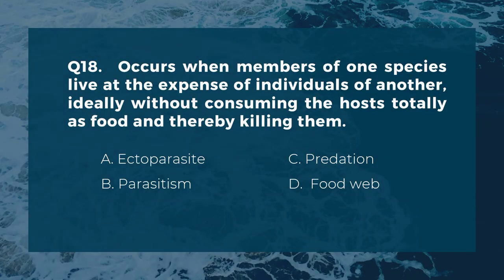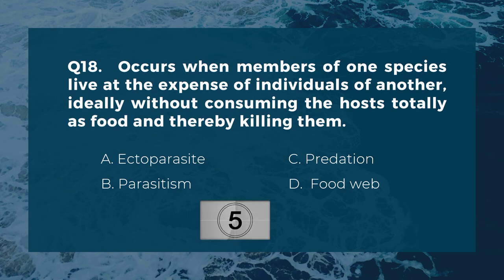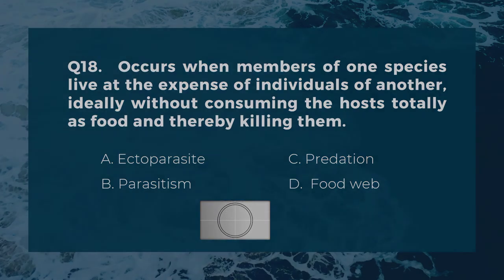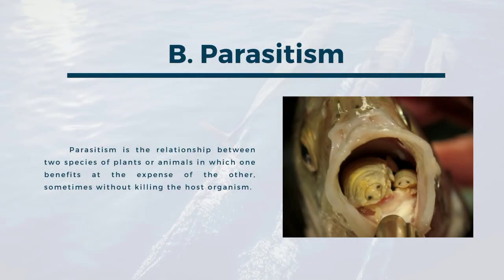Question eighteen: occurs when members of one species live at the expense of individuals of another, ideally without consuming the hosts totally as food and thereby killing them. A) ectoparasite, B) parasitism, C) predation, D) food web. The correct answer is B, parasitism. Parasitism is the relationship between two species of plants or animals in which one benefits at the expense of the other, sometimes without killing the host organism.